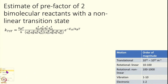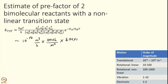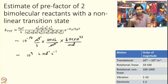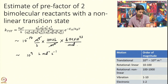Converting to units of liters and moles: multiply by Avogadro's number (10²³ mol⁻¹) and convert m³ to liters (10³ L/m³), giving 23 + 3 − 17 = 9, so roughly 10⁻⁹ L·mol⁻¹·s⁻¹. You can easily have a factor of 10 variation. This is the order of magnitude you should expect for the pre-exponential factor of a bimolecular reaction.